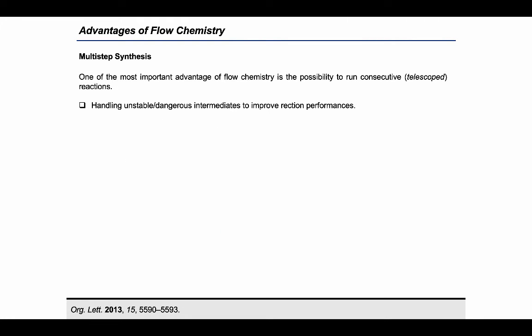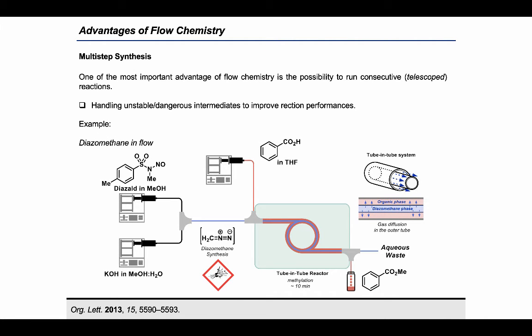Another important advantage of flow chemistry is the on-demand generation of unstable and highly reactive intermediates, since they can be safely quenched in the flow stream.